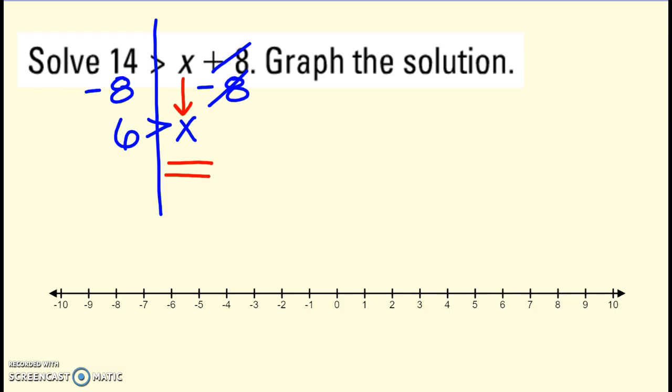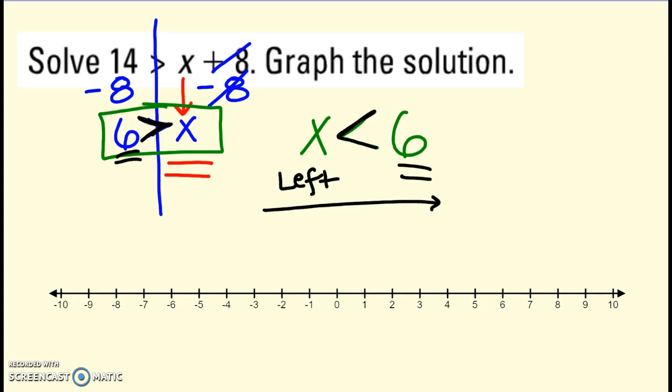So I'm going to take this entire thing and spin it around and rewrite it as x is less than 6. Double check yourself. Before, the bigger opening was towards the 6. The bigger opening still needs to be towards the 6. But I've written it with the variable on this left-hand side. And now I can read it from left to right. x is less than 6. That makes sense.